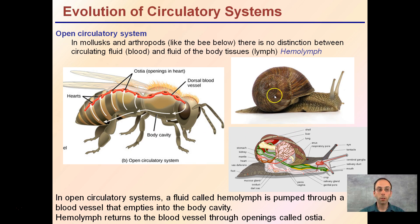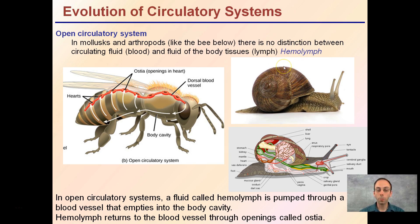In open circulatory systems — such as our mollusk example of the snail and arthropods — the fluid called hemolymph is pumped through blood vessels that empty into the body cavity. The hemolymph returns to blood vessels through openings. It's not a very controlled or specific system.